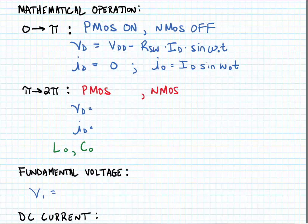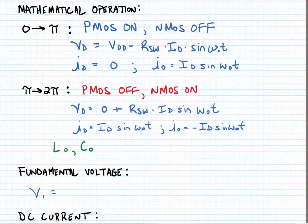In our next phase of operation, the PMOS is off, the NMOS is on, and the drain voltage and current are as follows. So now the drain voltage goes to zero plus R switch times ID sine omega naught T. This is due to any current flowing through the finite switching resistance in the transistors. Our output current is minus ID sine omega naught T, and the drain current is ID sine omega naught T.